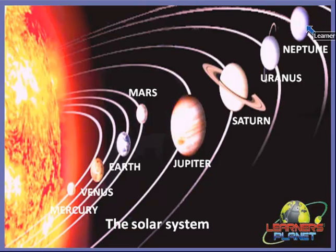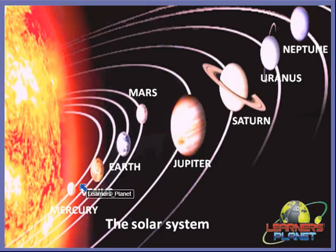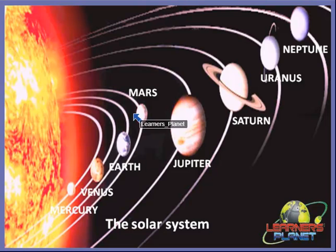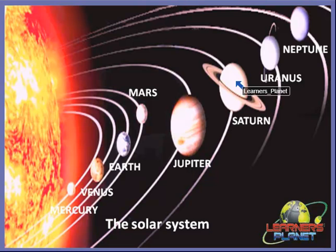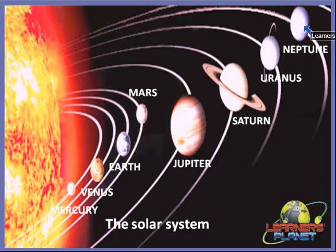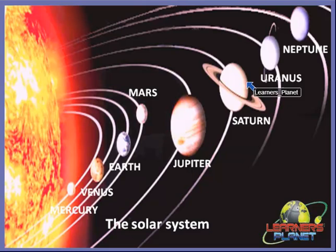Then Uranus and Neptune. So let's count: Mercury is first, Venus second, Earth third, Mars fourth, Jupiter fifth, Saturn sixth, Uranus seventh, and Neptune is the eighth. The sun and the eight planets are the parts of the solar system.